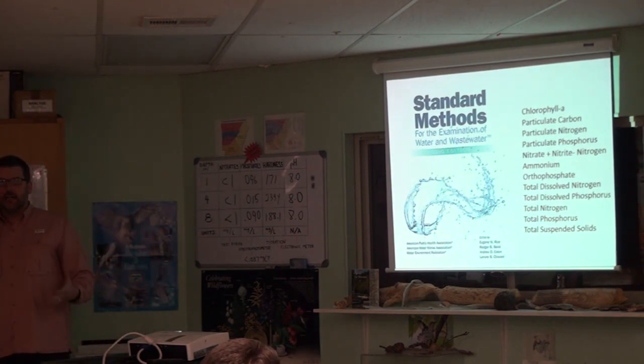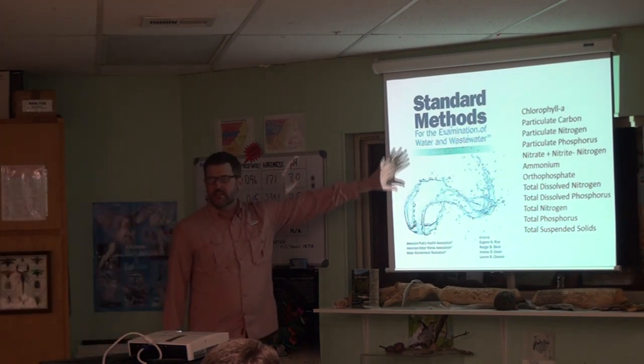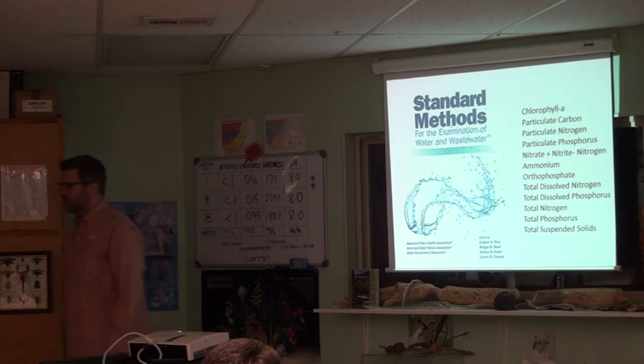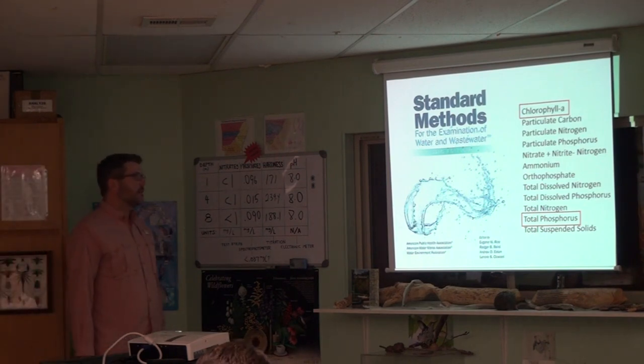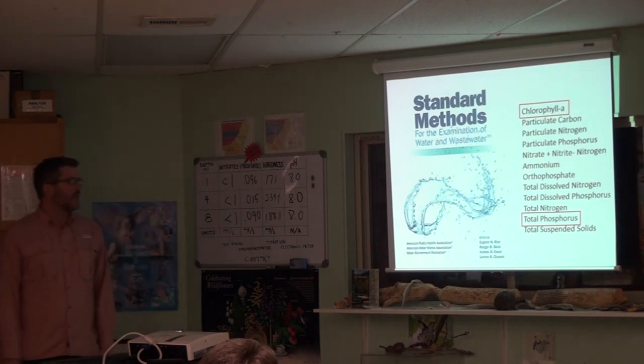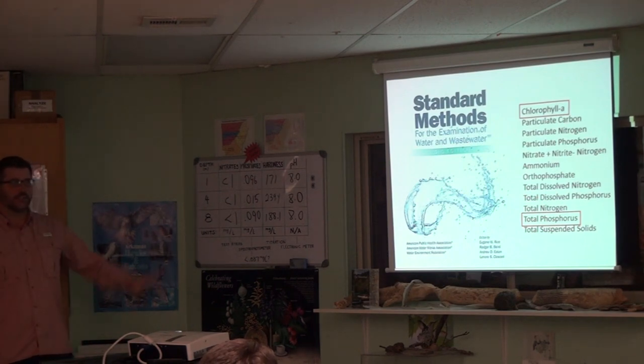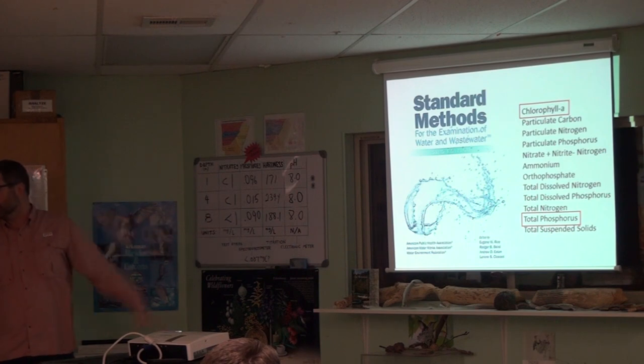So in our lab, we measure a lot of different things. Here's just a short list, and you can, in addition to a lot of other things, we also measure. But all these methods are in this book, Standard Methods for the Examination of Water and Wastewater. And I'm not going to talk about all these today. I'm going to focus on two measurements today that explain something about the eutrophication of Lake Fayetteville and other lakes. And that's just total phosphorus and chlorophyll A concentrations.